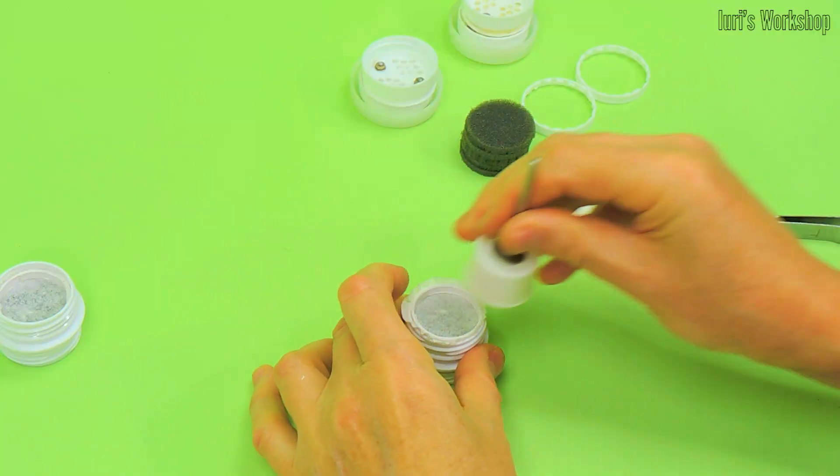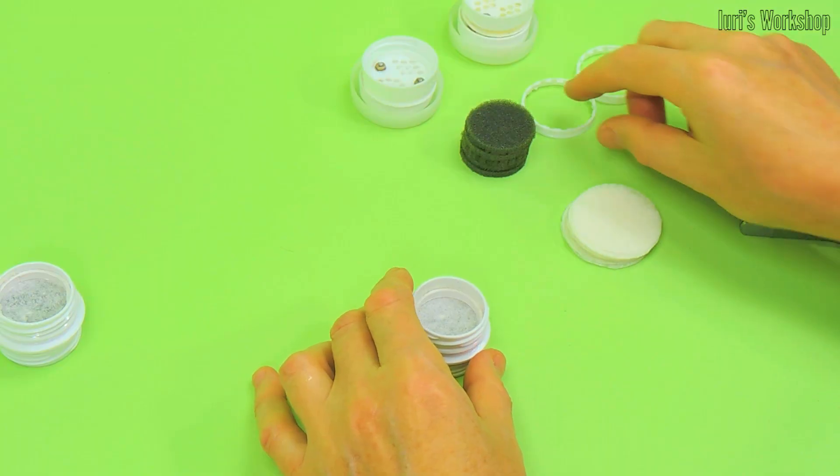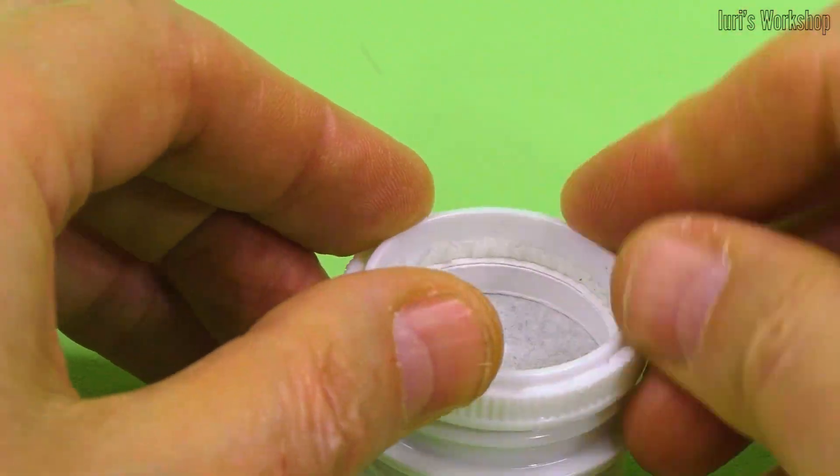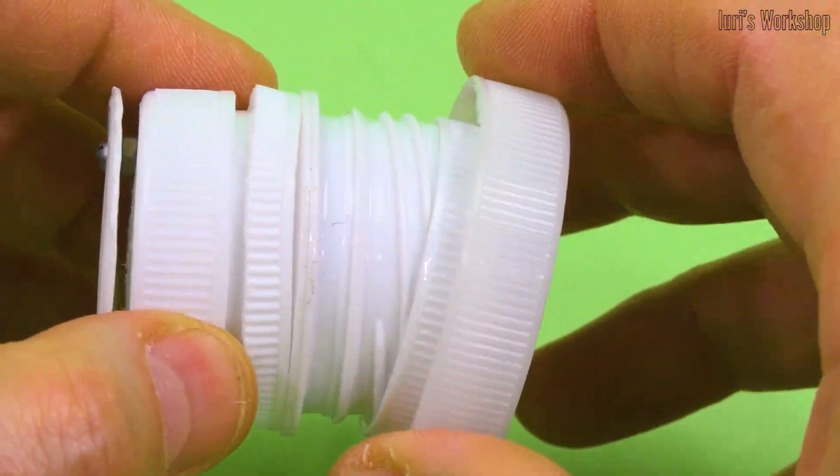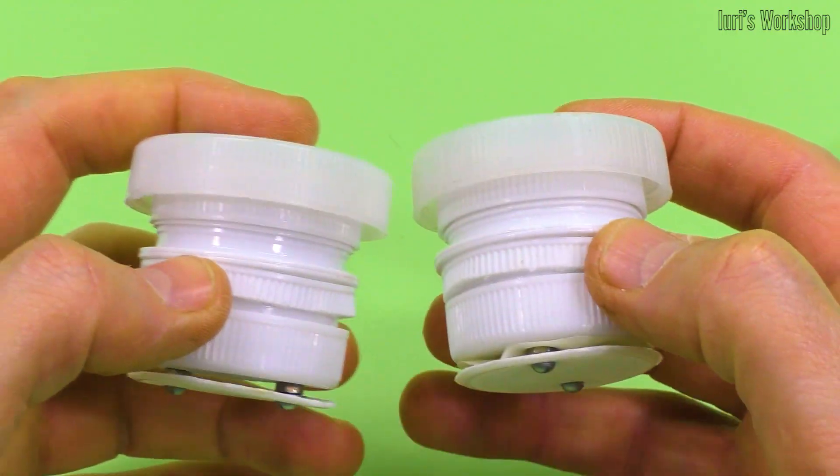Although in an exhalation cartridge, it is possible to reduce the number of filters to two by removing one of the HEPA filters. After installing the grids and valves, the cartridges are ready for use.